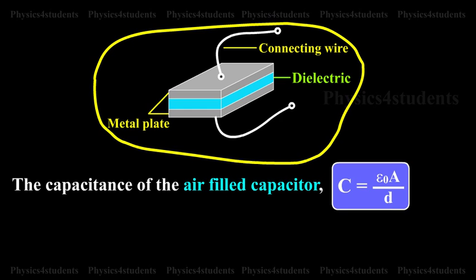The capacitance of the air filled capacitor, C is equal to epsilon naught A divided by D.